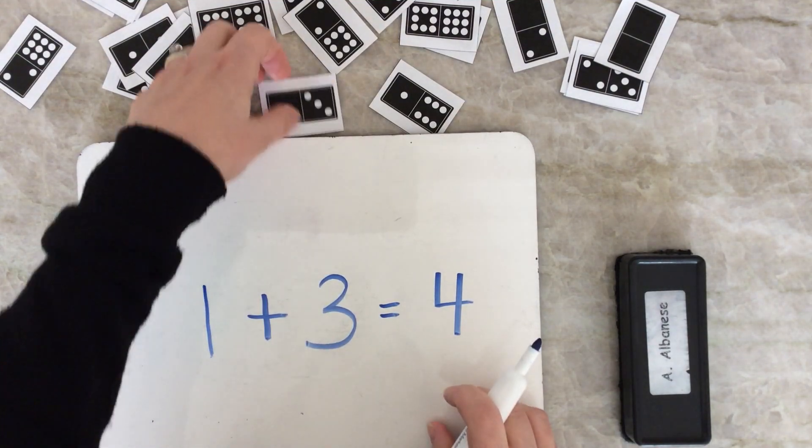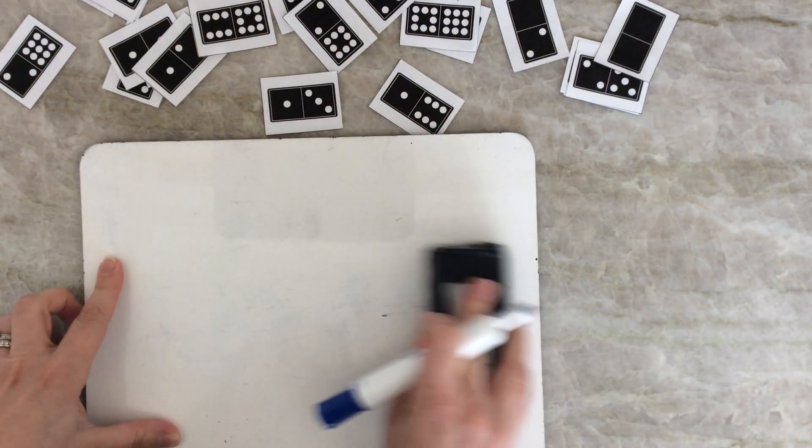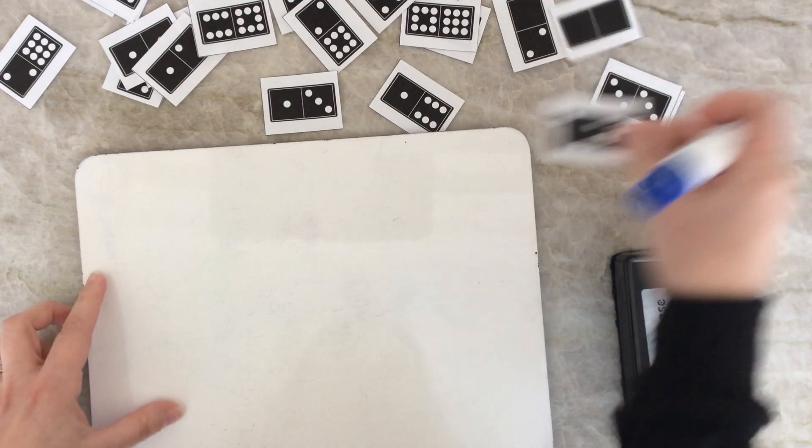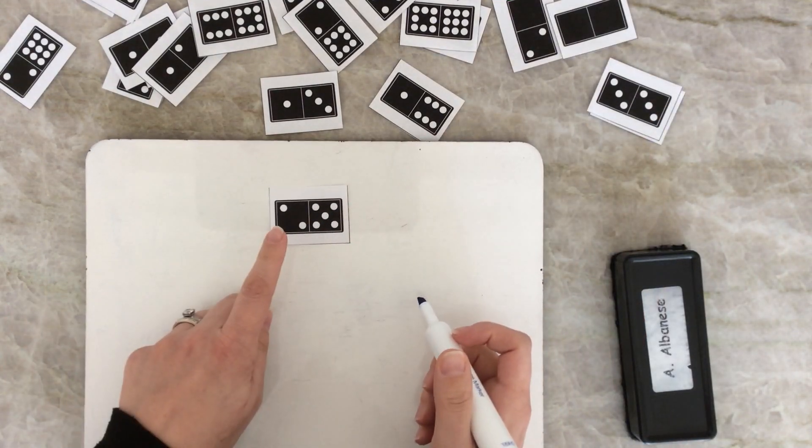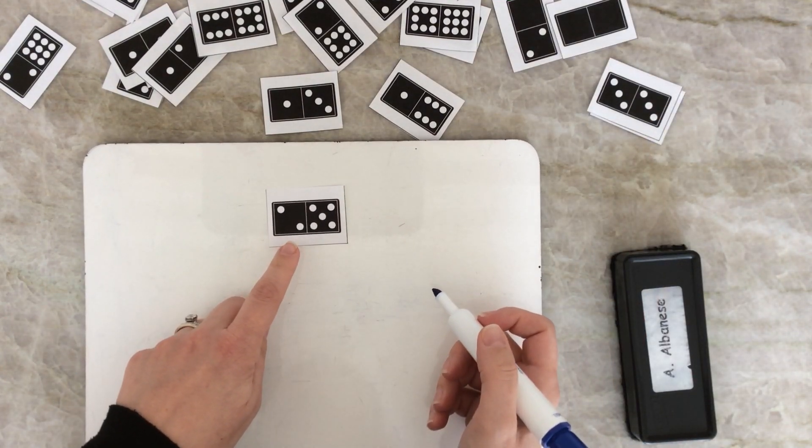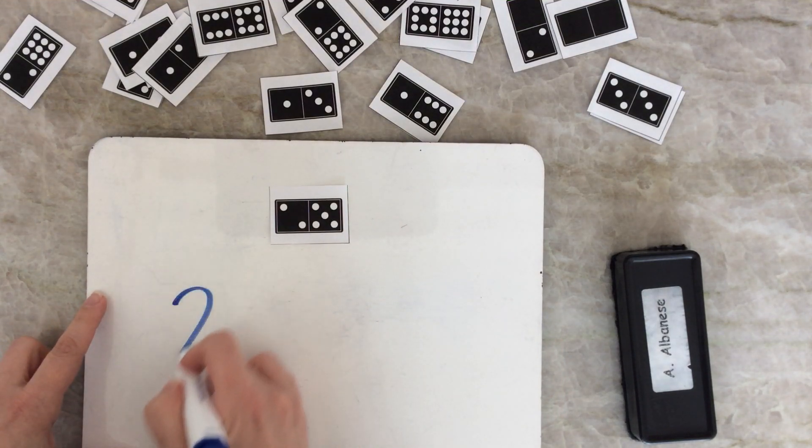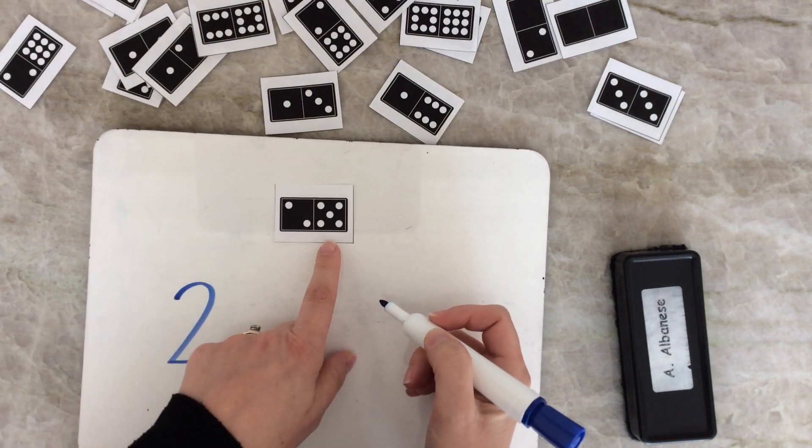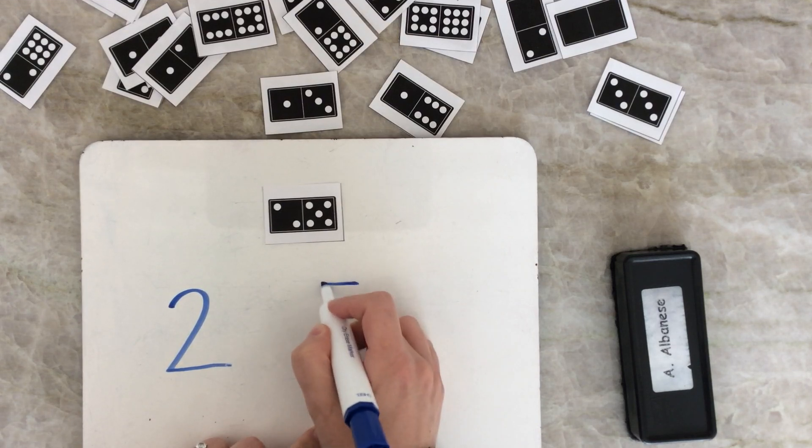Let's try another one. This one's a little bit tricky. How many dots do you see over here? 2. How many dots do you see over here? 5.